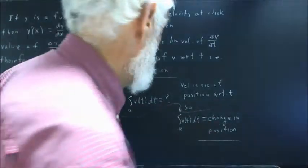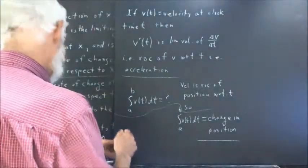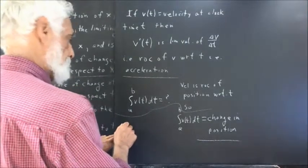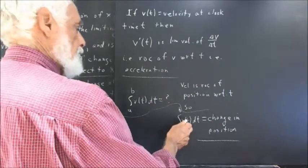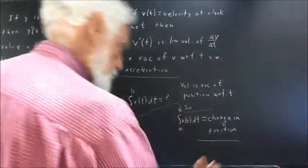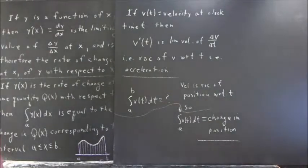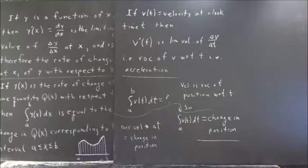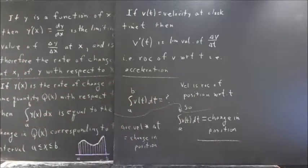V of t dt is change in position. And we'll note that on a small interval, if you take the average value of v of t multiplied by the change in t, you get a change in position. And let me write something down here and then refer to it.